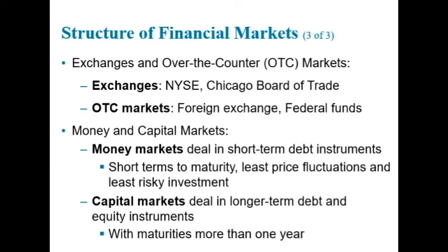As a result, corporations and banks actively use the money market to earn interest on surplus funds that they expect to have only temporarily. Capital market securities, such as stocks and long-term bonds, are often held by financial intermediaries, such as insurance companies and pension funds, which have little uncertainty about the amount of funds they will have available in the future.